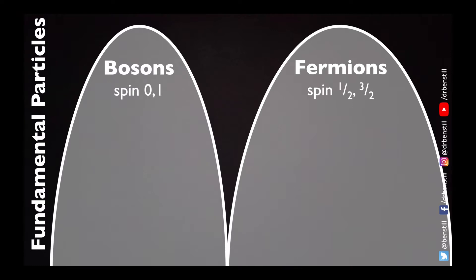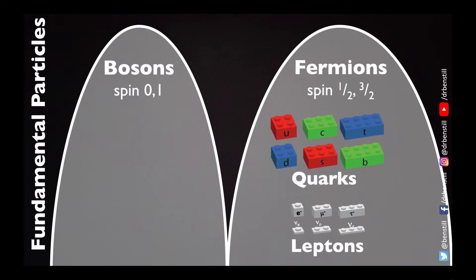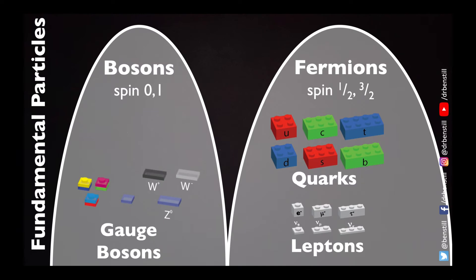The fermions are the particles that make up matter around us. There are the leptons, which include the electron and its heavier versions the muon and tau, plus the neutrinos. And then there are the quarks which build to make protons, neutrons, and other complex particles. The bosons however are the force-carrying particles: the colourful gluons, the photon, and the weak bosons, which carry the strong force, the electromagnetic force, and the weak force.